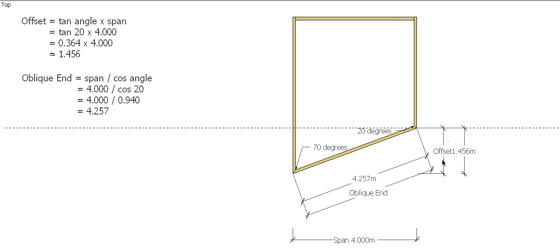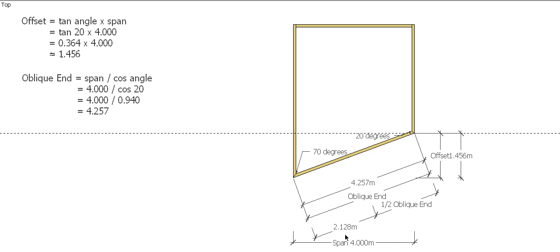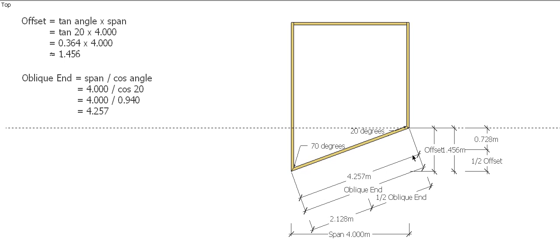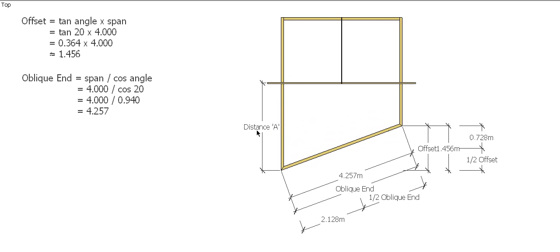So now we know what our offset distance is, we know what our oblique end distance is. We then need to know what half of each of those are. So we just simply halve our oblique end which ends up being 2.1285, and we work out what half our offset is. This is 728 mil. So now we're actually ready to work out where our centering rafters are going to go.